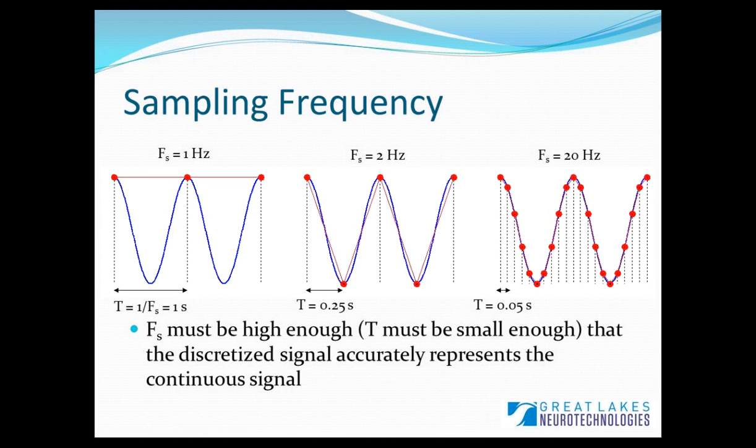The next thing to consider is how we go about selecting the sampling frequency. Here we have a 1 Hz continuous sine wave shown in blue. In red are the discrete samples at three different sampling frequencies. Sampling at 1 Hz, shown on the left, our digitized signal doesn't look at all like the sine wave. Sampling at 2 Hz, shown in the middle, we capture the basic oscillations of the sine wave, but the morphology is not captured. If we increase the sampling frequency to 20 Hz, the discrete samples fit the sine wave pretty well.